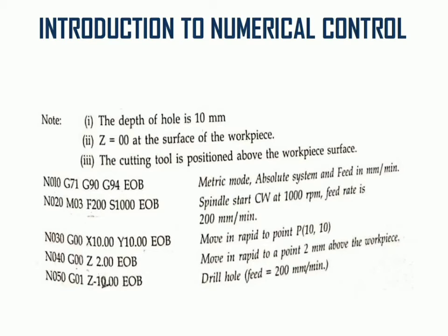The second instruction block begins with sequence coding N02. We start the spindle with miscellaneous code M03. Then spindle speed is mentioned with the speed function S1000 EOB. Feed is indicated with the feed function F200.